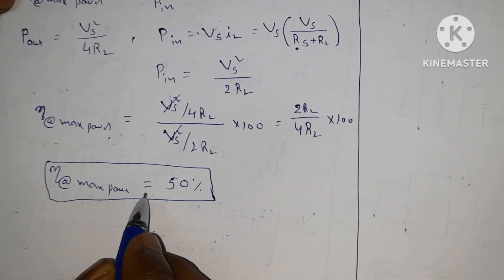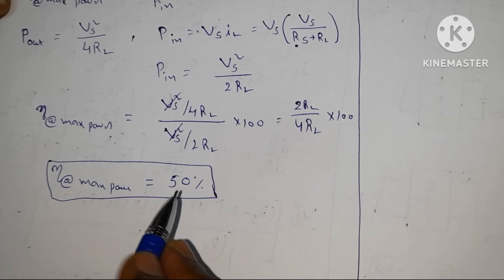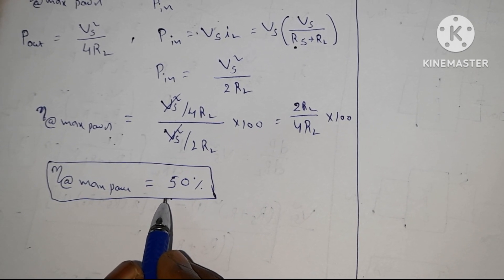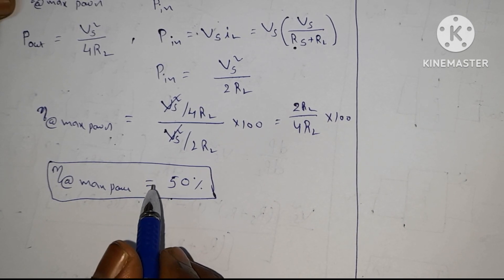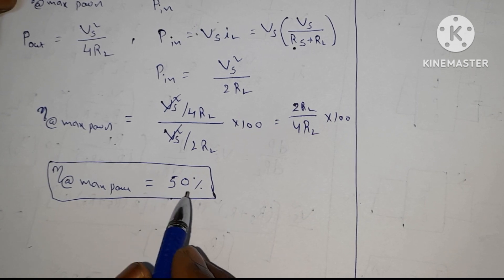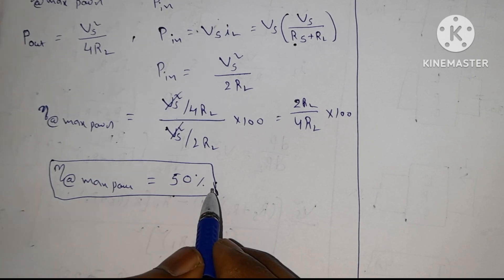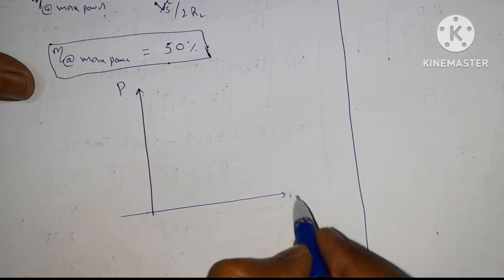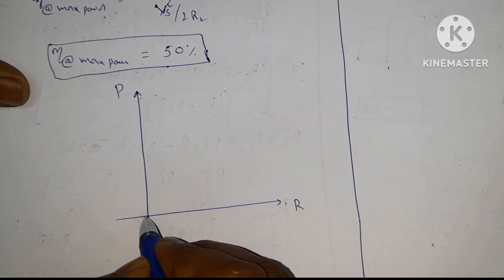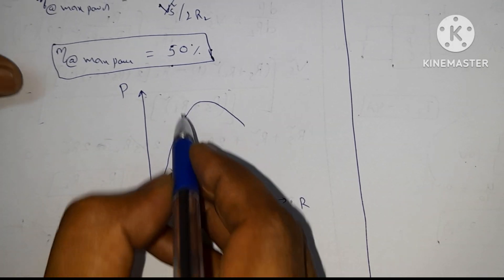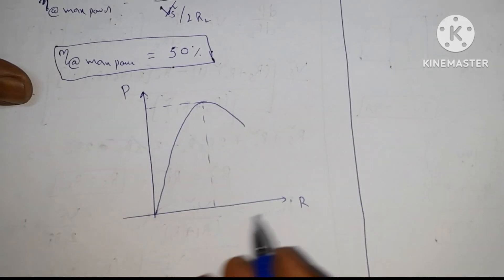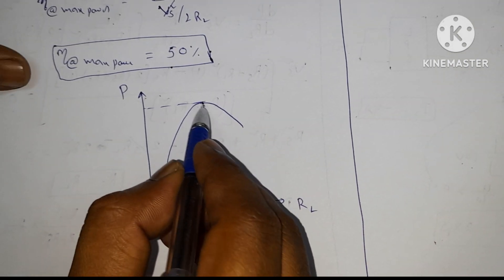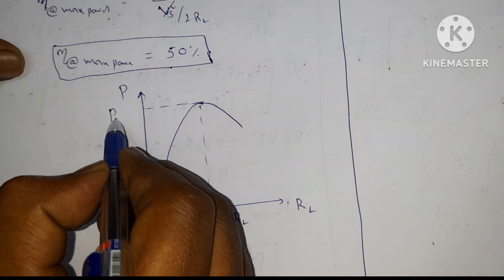Maximum power transfer theorem is only applicable for electronic circuits, not for electrical circuits. In electrical circuits, bulk power is transferred from one place to another, whereas in electronic circuits the power consumption is very less. If you draw the graph, with power on the y-axis and resistance on the x-axis, power is maximum at the point where Rs = Rl.